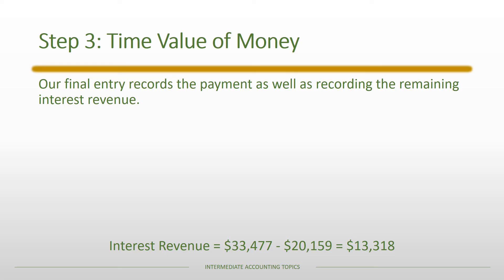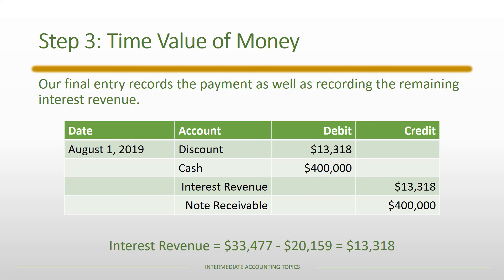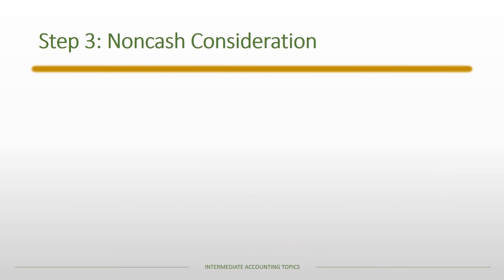For the final entry, we record the last bit of interest revenue along with the payment of the note receivable. The initial discount was $33,477, capturing total interest revenue over the life of the note. We already accrued $20,159, so we need to accrue $13,318 as the note is repaid during 2019. The entry records interest revenue of $13,318 and amortizes the discount by $13,318, bringing the discount to zero. We then receive the $400,000 cash and remove the note receivable from our books.